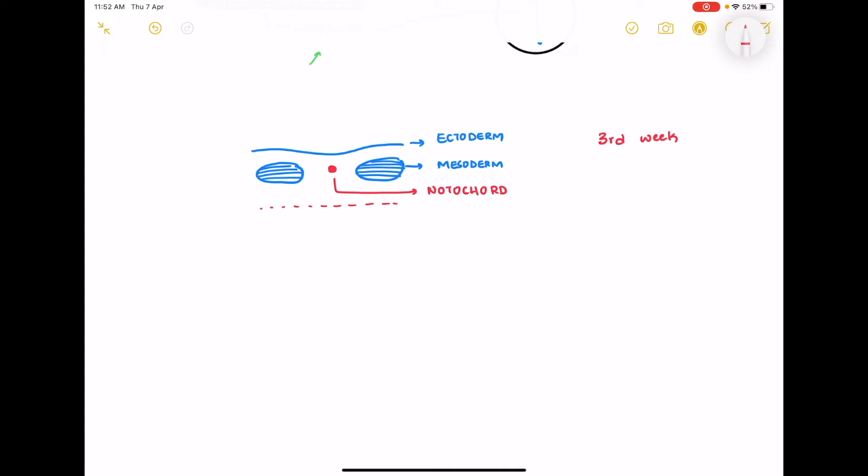So the ectoderm overlying the notochord differentiates and this becomes neuroectoderm. So this is what is going to develop into the neural tube and then into the central nervous system while what is on the periphery, that is still the surface ectoderm. But only this part becomes the neuroectoderm. This is now called the neural plate.